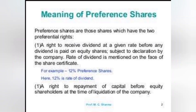First of all, what is meant by preference share? With the name itself you can understand — certain preferences are given to that kind of share, that is why it is called a preference share. Preference shares are those shares which have two preferential rights: one is the right to receive dividend at a given rate, and dividend is paid before paying to the equity shareholder, subject to declaration by the company. The rate of dividend is mentioned on the face of the share certificate — for example, 12% preference share.